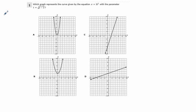Next one, which graph represents the curve given by the equation x equals 3t squared with the parameter t equals the square root of quantity y minus 2. And here we don't have these things both where we can graph them parametrically.